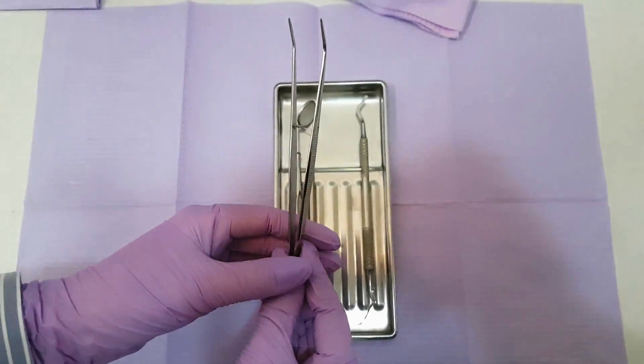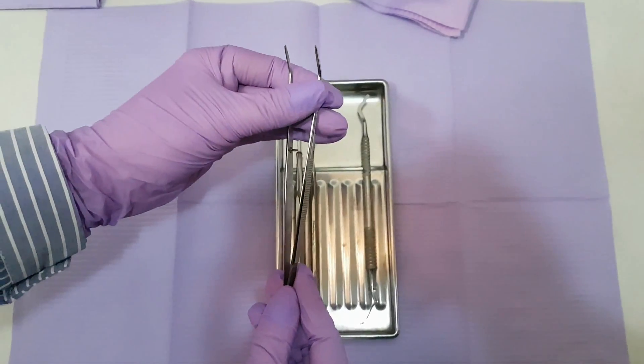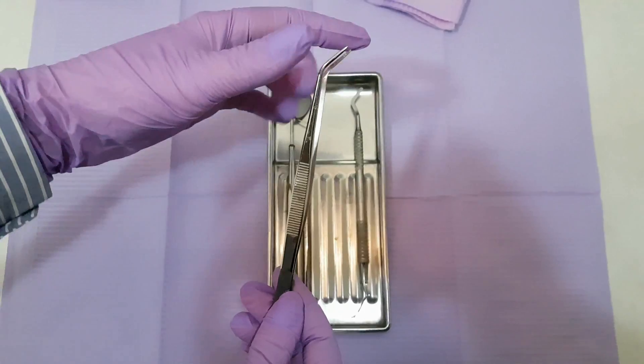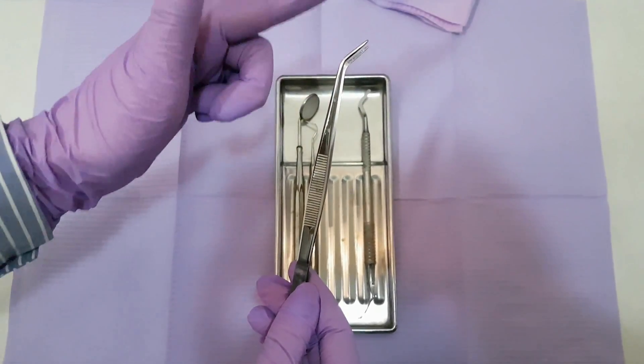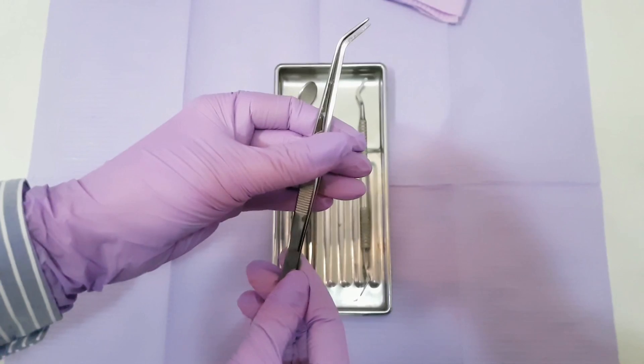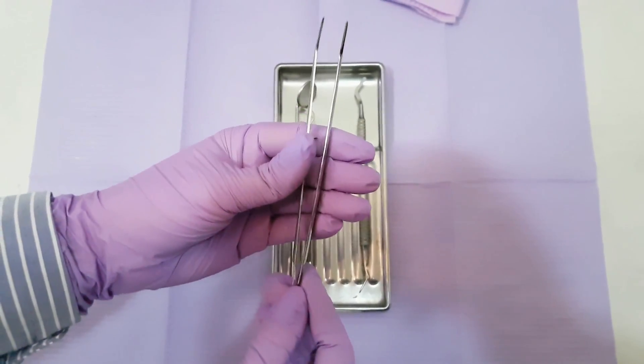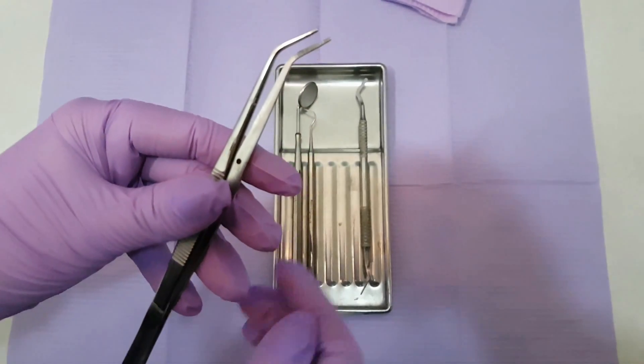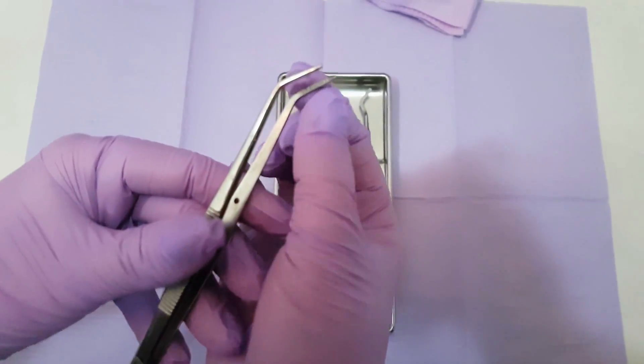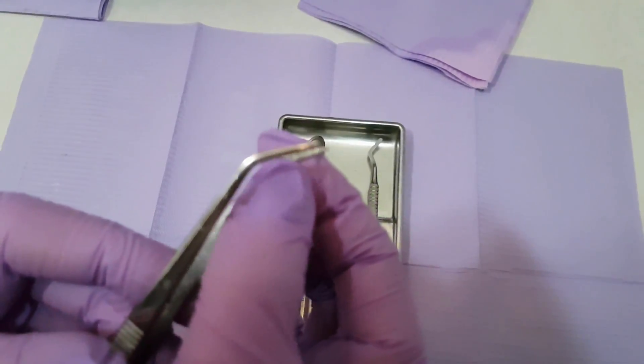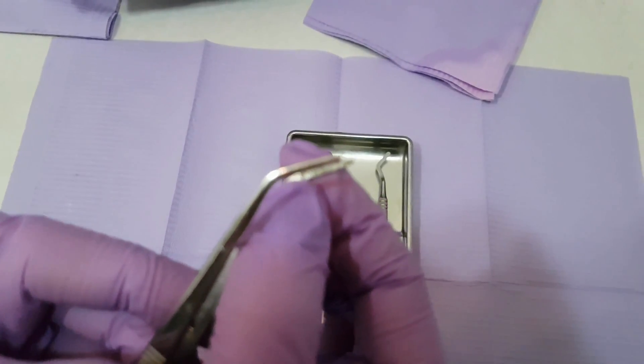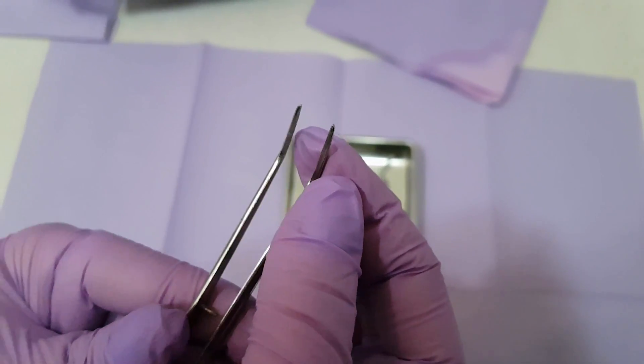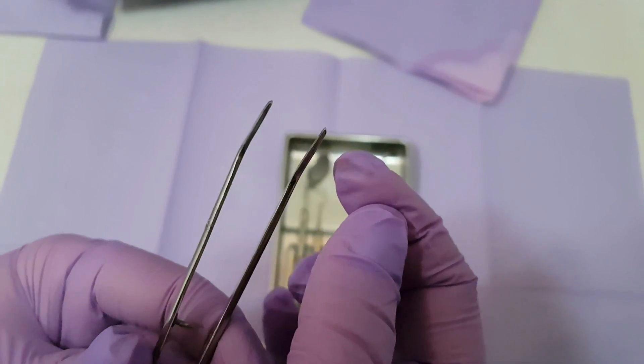And this is a pair of tweezers. There are two kinds of tweezers: regular dentist ones and surgical. This is a regular dentist tweezer. It is used to pick up small items during different dental procedures. This is the working part we pick up things with. And we can open and close it of course.